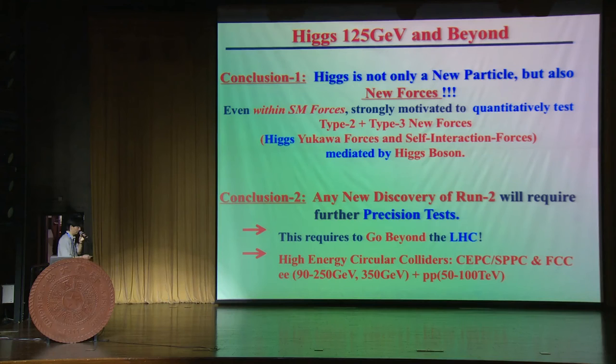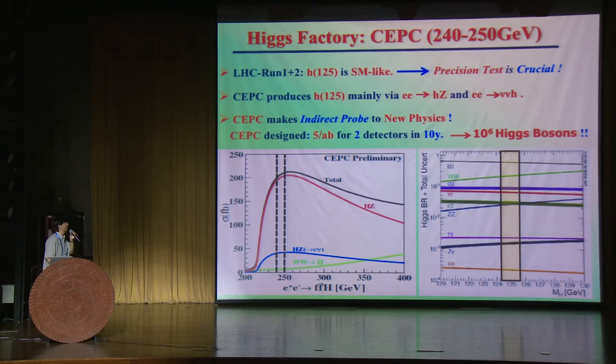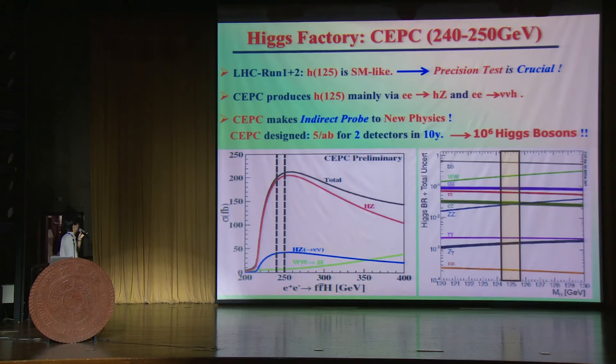Since Run 1 and Run 2 with more than 5-sigma evidence for the 125 GeV Higgs boson, it is pretty much standing on solid ground, and that makes precision tests crucial. The major production channel is ZH production, with a peak of the cross-section around 240 to 250 GeV — that is why the goal for the first phase is set there.